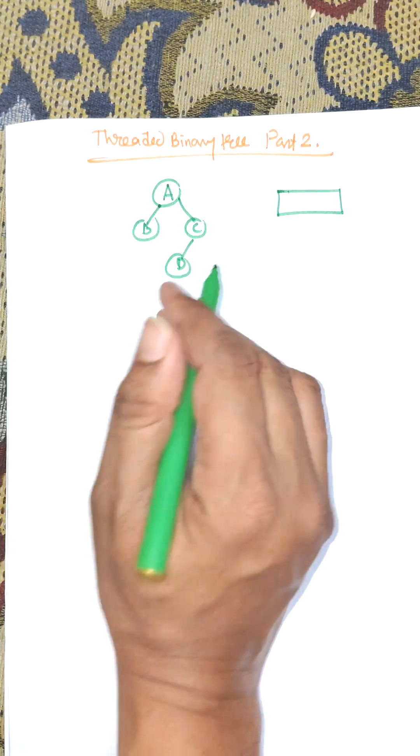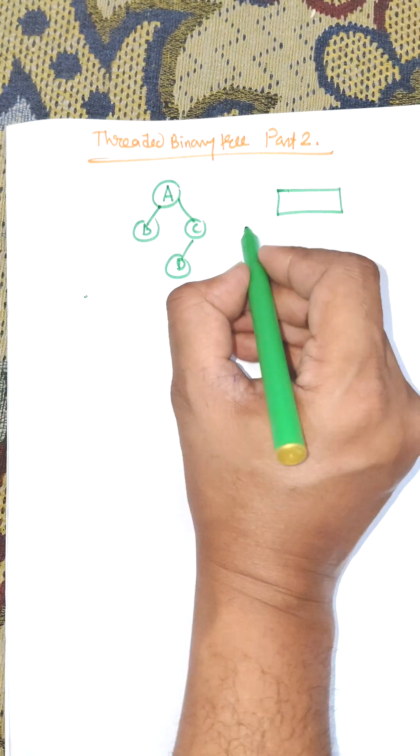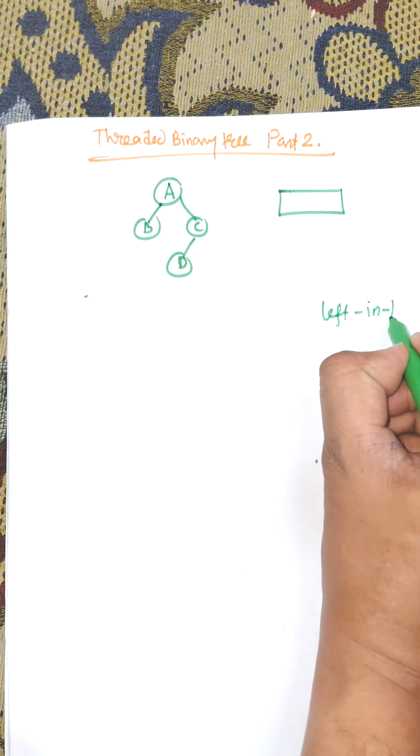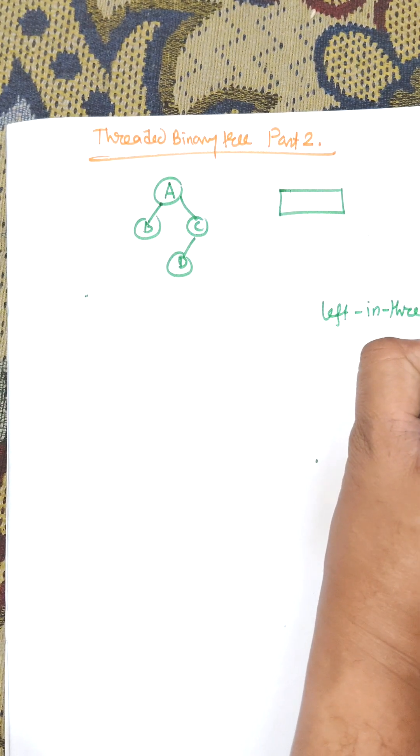There are three kinds of threaded binary trees. One is left-in threaded. We are considering left-in threaded, where the left pointer will be pointed by a thread.